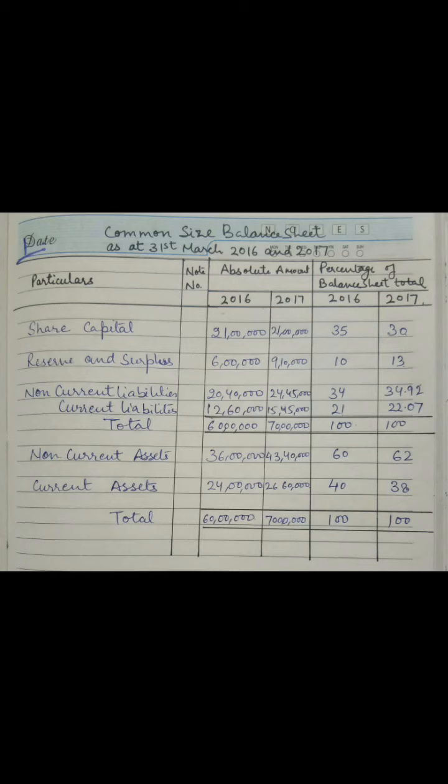Below that we have to write all the assets. Non-current assets are 36 lakhs and 43 lakhs 40 thousand for 2016 and 2017. Current assets are 24 lakhs and 26 lakhs 60 thousand for 2016 and 2017 respectively. Adding all assets, the total is again 60 lakhs and 70 lakhs — and of course the total of both the liability and asset sides should be equal.